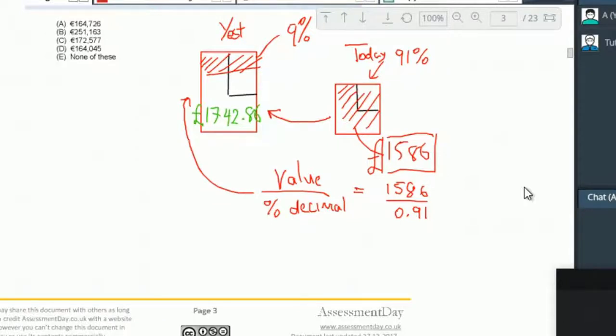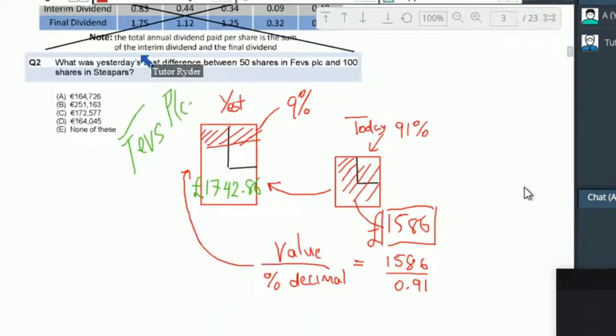That's the calculation, right? So you can always check that later. So that would be for Feb's PLC. That's our first answer. Remember, we're only trying to find the difference between 50 shares of Feb's and 100 shares of Steepers. So let's take Steepers now.